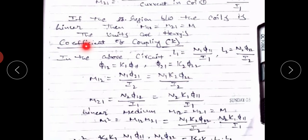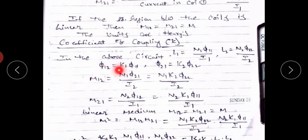Next, the coefficient of coupling, represented by K, is a constant value. In the above circuit, the self-inductance L1 equals N1·φ11 divided by I1, and L2 equals N2·φ22 divided by I2. φ12, the part of the first coil flux that links with the second coil, equals K1 times φ11. Similarly, φ21 equals K2 times φ22.